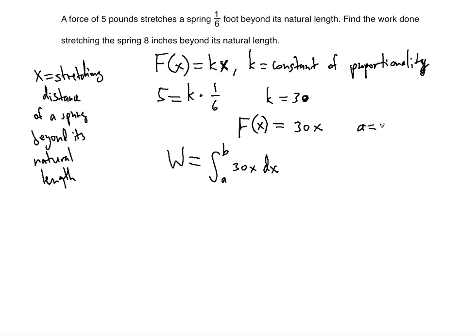So how do we determine a through b? We know that a is equal to 0, because you will start from 0. Because obviously when it says the force of 5 pounds stretches the spring 1/6 foot beyond its natural length, obviously starting from the natural length is the 0. So a is equal to 0.